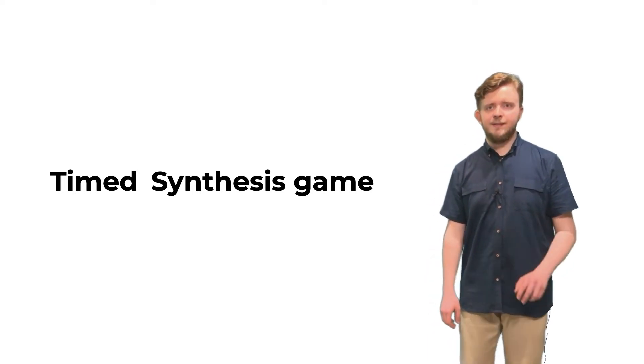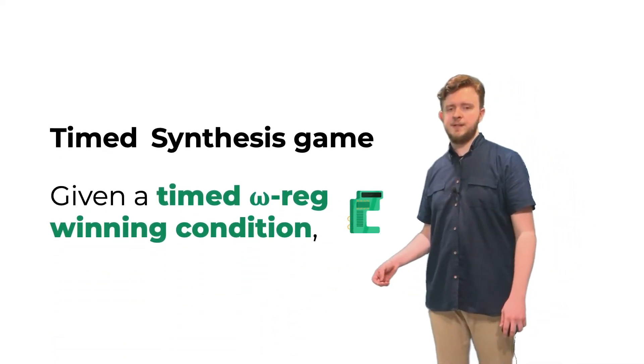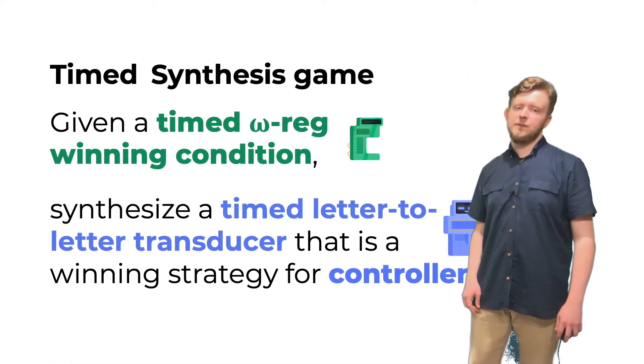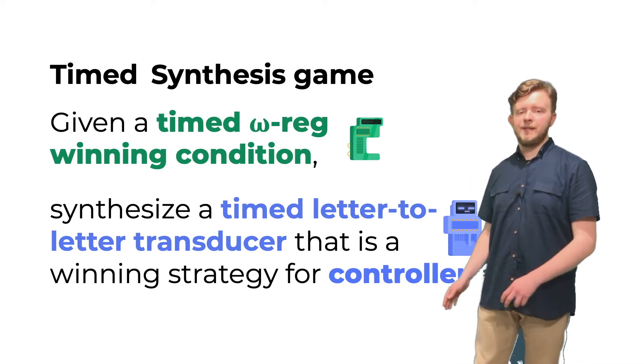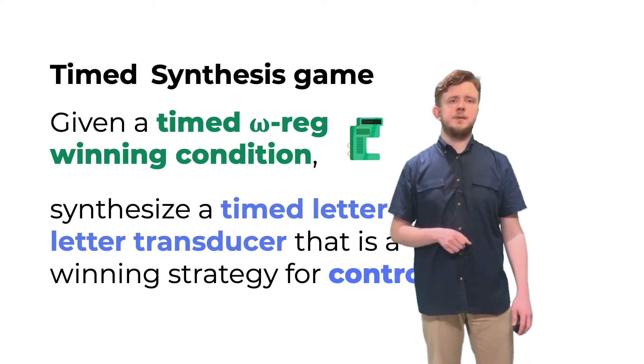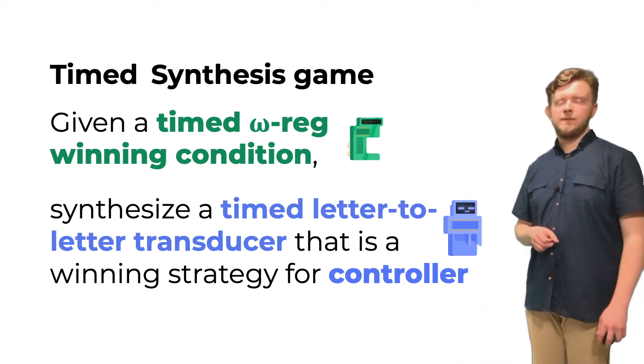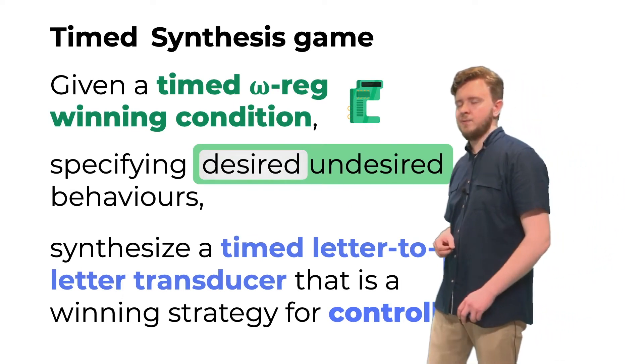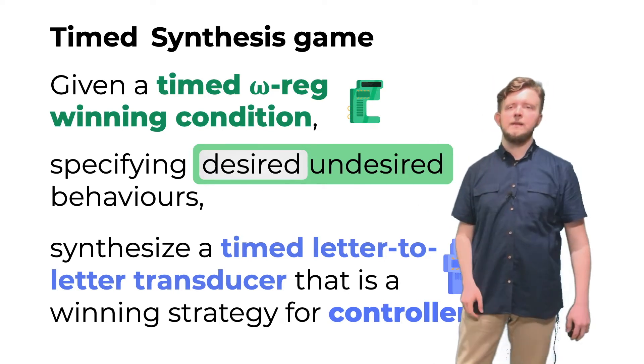Let me state the synthesis problem for our timed games. As before, we are given a specification, which is now a timed omega regular language. Our objective is to synthesize a timed letter-to-letter transducer, which is a winning strategy for the controller. However, there are a few new design choices we need to make because of the addition of time. First of all, now we may wish to specify whether the winning condition describes desired or undesired behaviors of the controller.